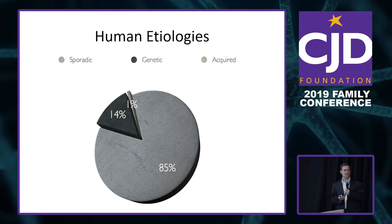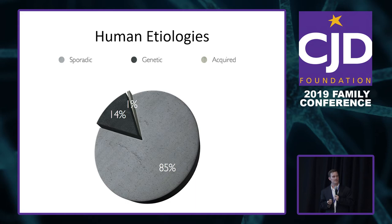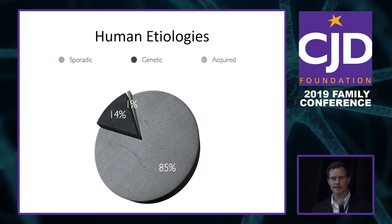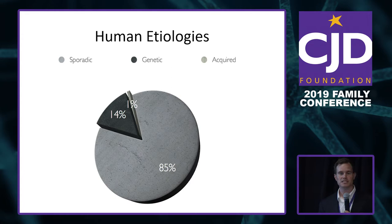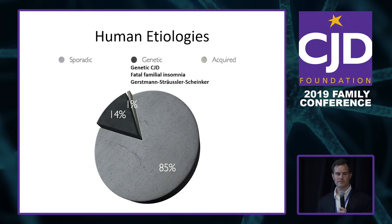There are three main types of prion disease in humans. By far the most common is sporadic, about 85% of all cases. Sporadic means the normal prion protein spontaneously misfolds — we don't know why, but it tends to be a risk as you get older, similar to other neurodegenerative illnesses. Ten to fifteen percent are due to a genetic mutation of the prion protein gene, named based on clinical symptoms and pathology: genetic CJD, fatal familial insomnia, and Gerstmann-Sträussler-Scheinker syndrome.